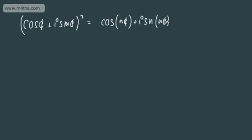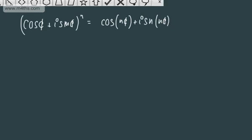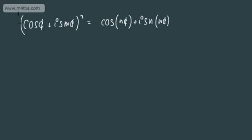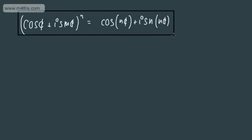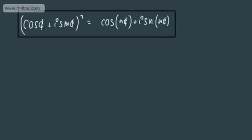If you want to lodge that in your brain, please do. If not, write it down — you will be expected to remember and use it. So cos θ plus i sin θ to the power of n is equal to cos nθ plus i sin nθ.